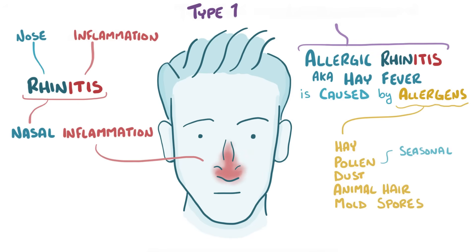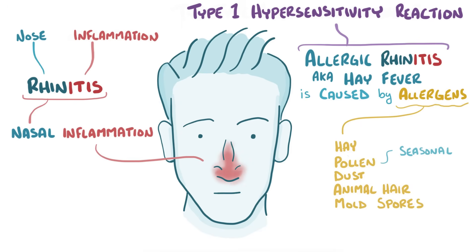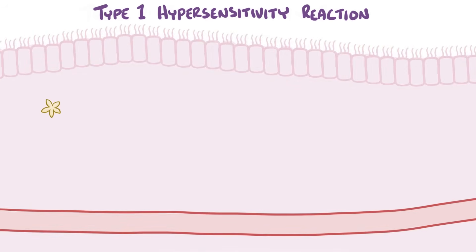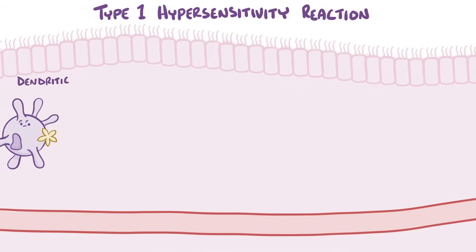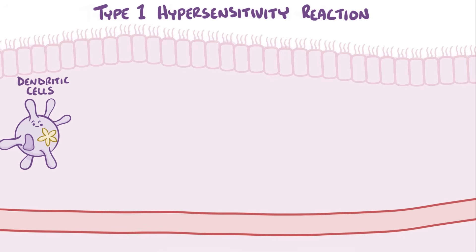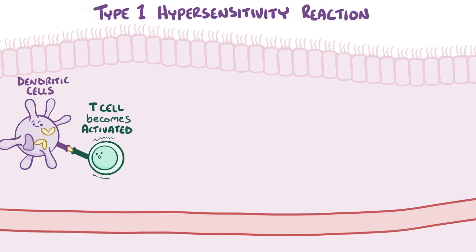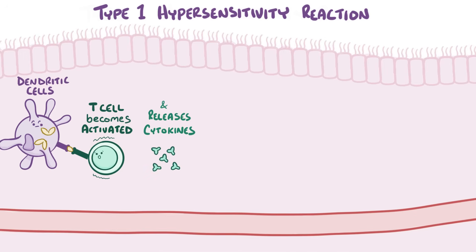Allergic rhinitis is a type 1 hypersensitivity reaction, which is a type of allergic reaction that starts with exposure to an environmental allergen. So let's say that a bit of pollen enters the nose — it can get picked up by a dendritic cell, which is a type of immune cell that gobbles up the foreign particle and presents it to a nearby lymphocyte called a T-cell. If that T-cell gets activated, it kicks into action, producing cytokines which help to get other immune cells involved.